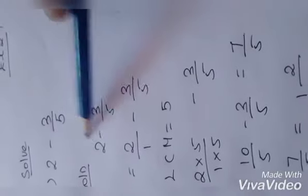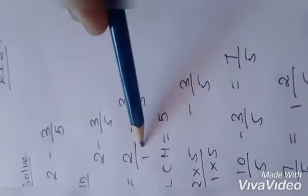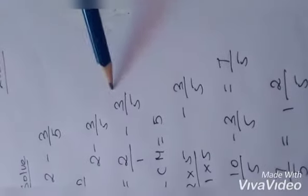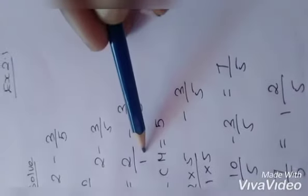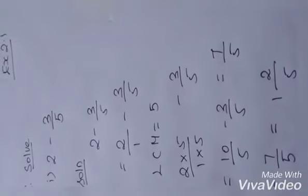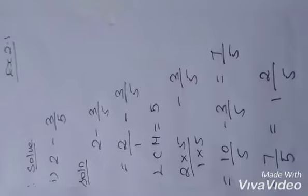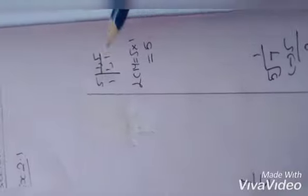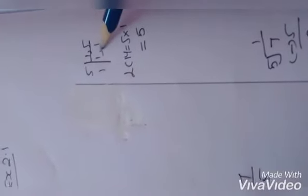So I am writing it as 2 by 1 minus 3 by 5. Now the denominators are different — it is 1 and 5. I have to make the denominators the same to convert it into a like fraction. Only then can we do the subtraction. So in my rough column, I am working out the LCM. 5 table: 1 one is 1, 1 five is 5.